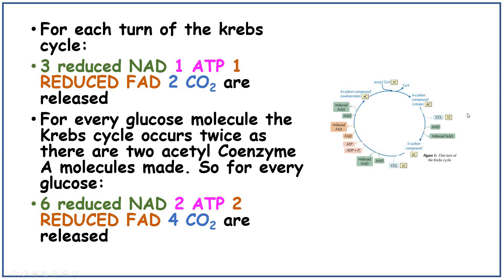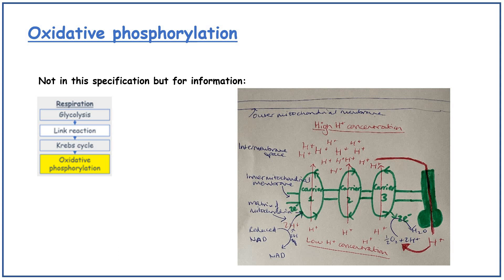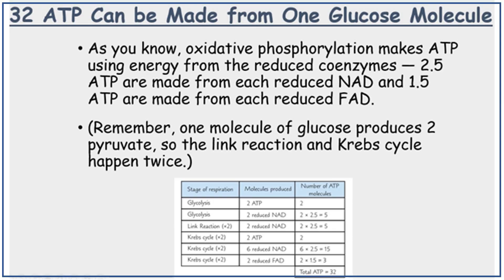Remember that the Krebs cycle happens twice per glucose molecule, so totals per glucose are: six reduced NAD, two ATP, two reduced FAD, and four carbon dioxide released. There is also a final stage called oxidative phosphorylation, though this isn't on the specification. In total, 32 ATP can be made from one glucose molecule. Oxidative phosphorylation makes ATP using energy from the reduced coenzymes: 2.5 ATP from each reduced NAD and 1.5 ATP from each reduced FAD. Remember, one glucose molecule produces two pyruvate, so the link reaction and Krebs cycle each run twice.